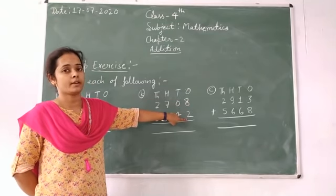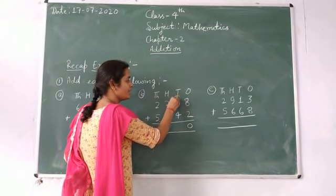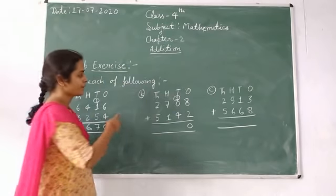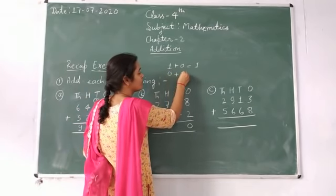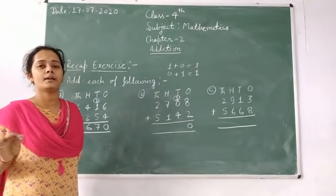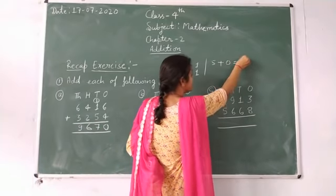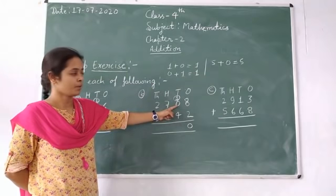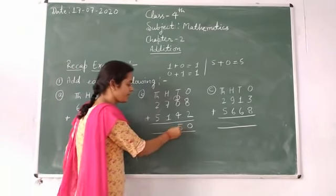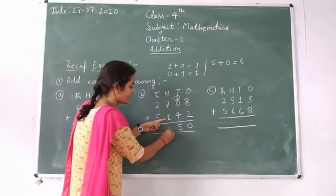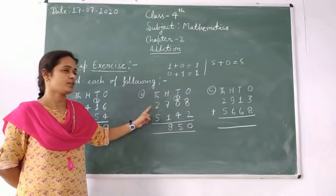Eight plus two — two numbers forward from eight — we get ten. For ten, write zero here, and carry one to the tens place. One plus zero equals one. Zero plus one equals one. That means when a number is added to zero, we get the number itself. Five plus zero equals five. Here, one plus zero equals one. One plus four — four numbers forward from one — we get five. Seven plus one — easy, we get eight. Two plus five — five numbers forward from two — we get seven.